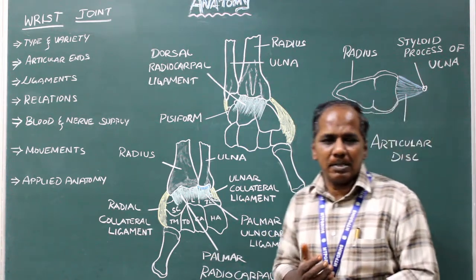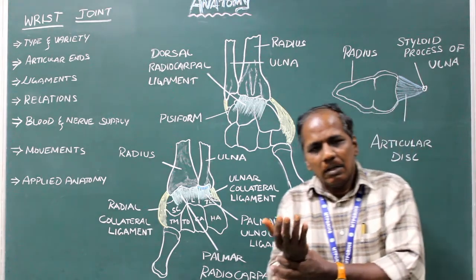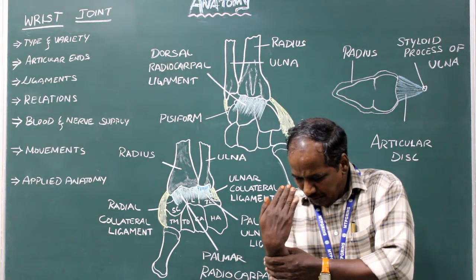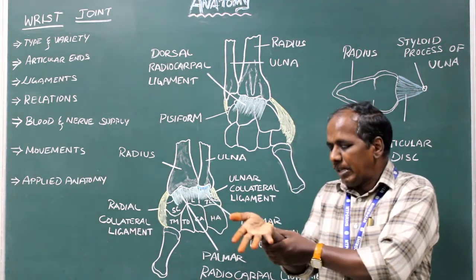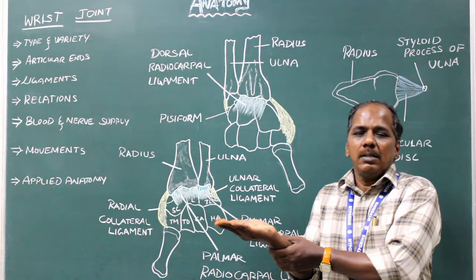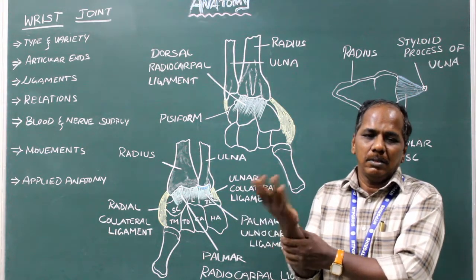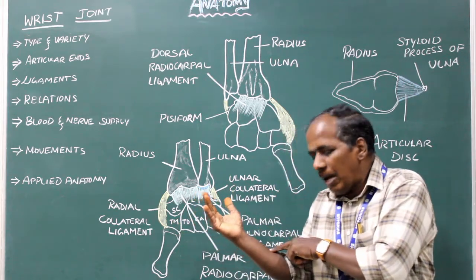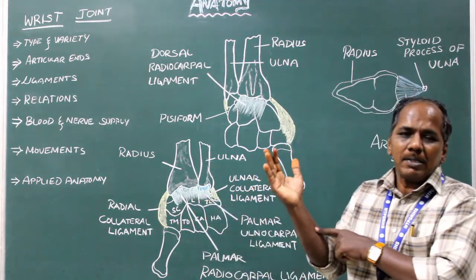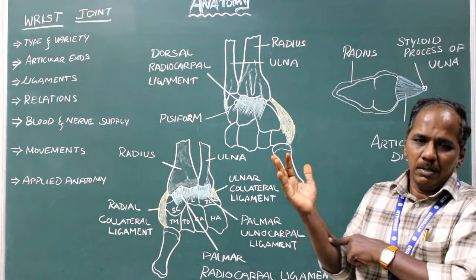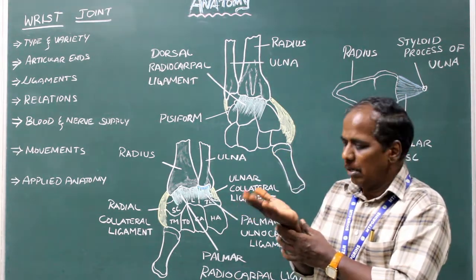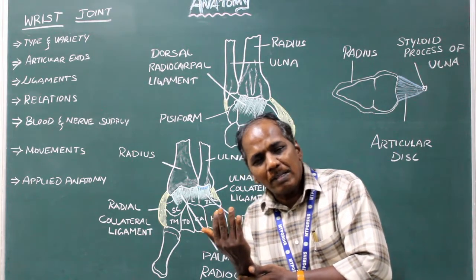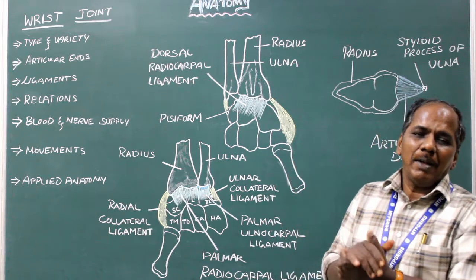Movements: it is a biaxial joint, so movements include flexion, extension, adduction, abduction, and circumduction. Flexion — muscles: flexor carpi ulnaris and palmaris longus. Extension — muscles: extensor carpi radialis longus, extensor carpi radialis brevis, and extensor carpi ulnaris.